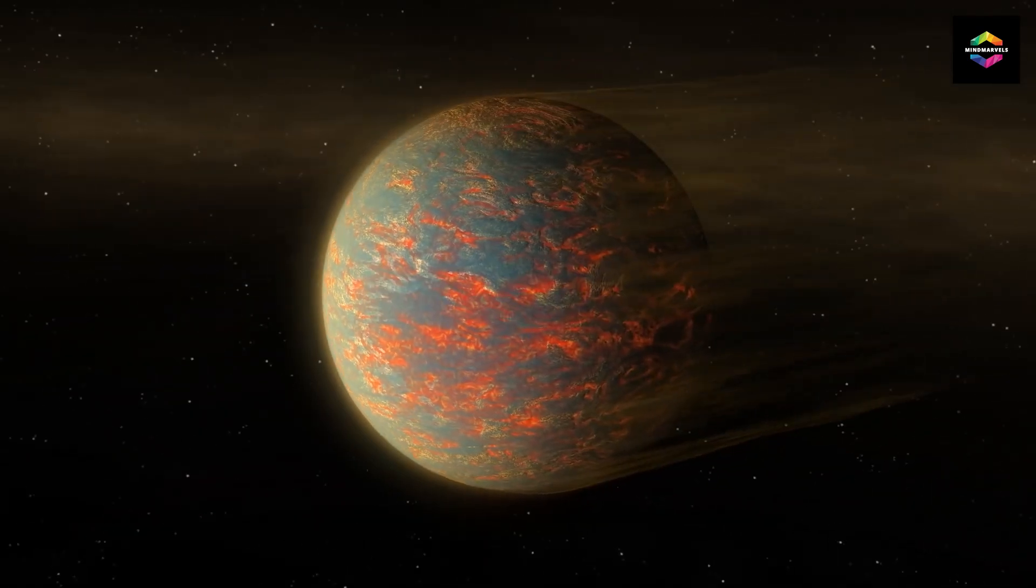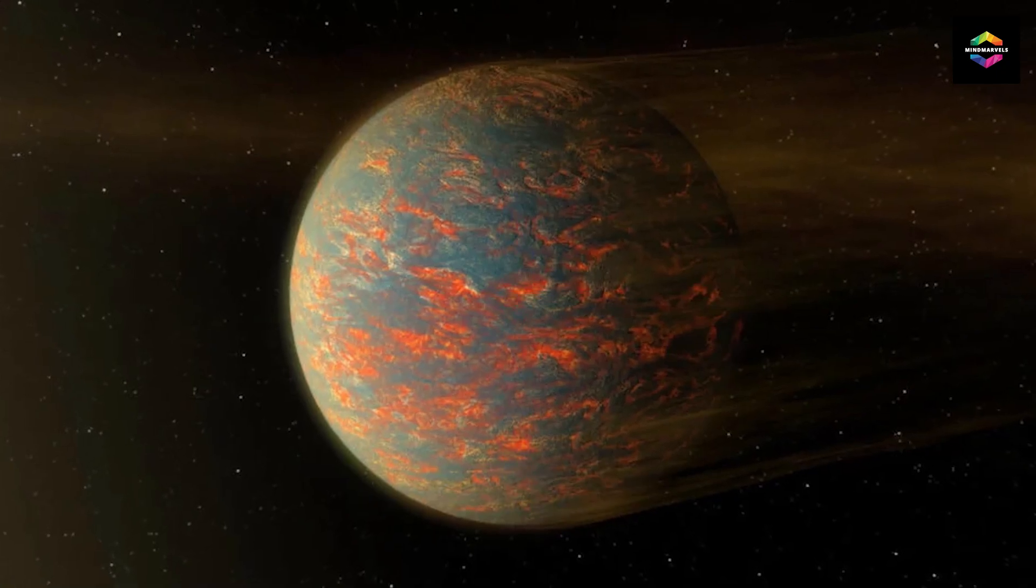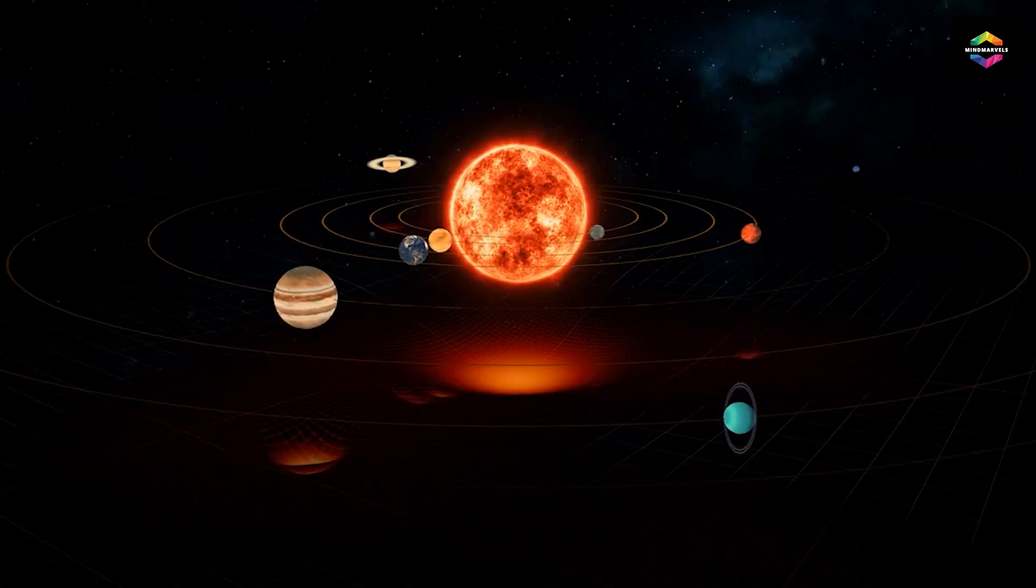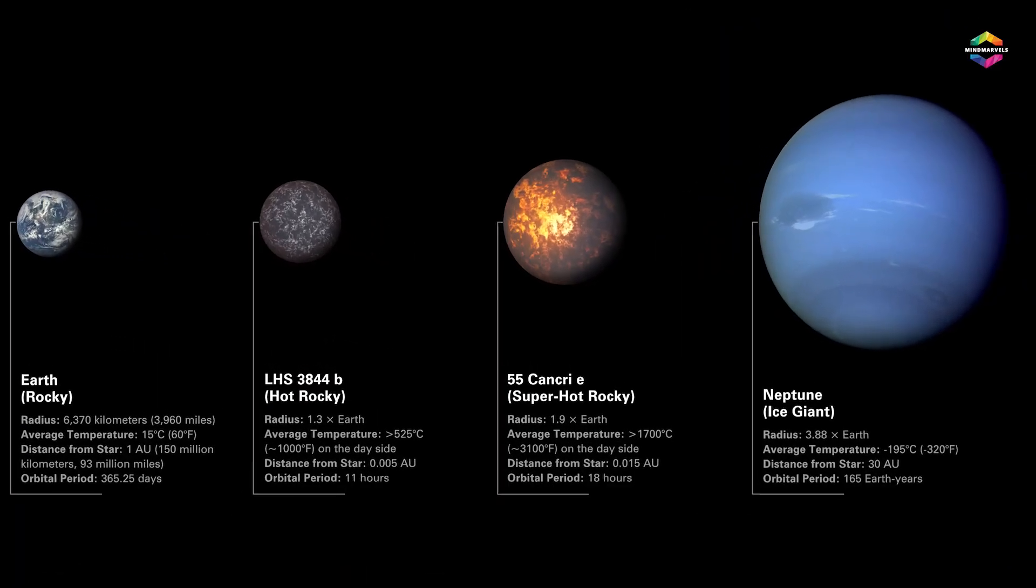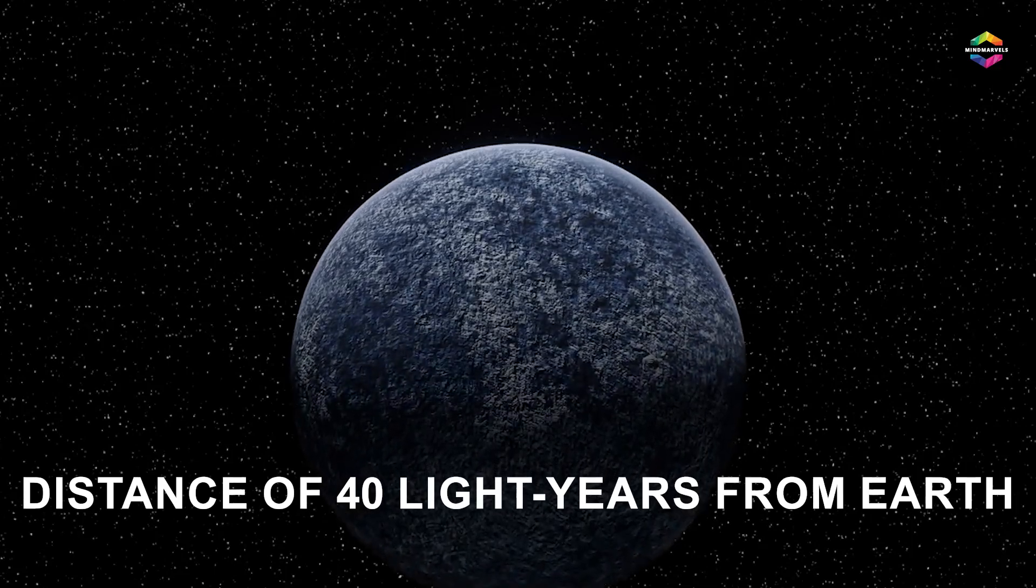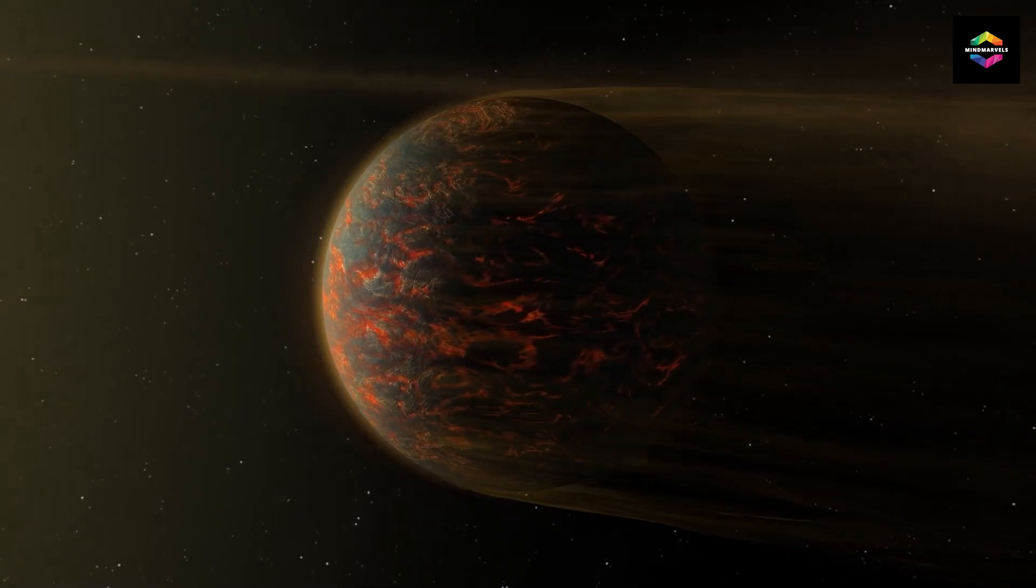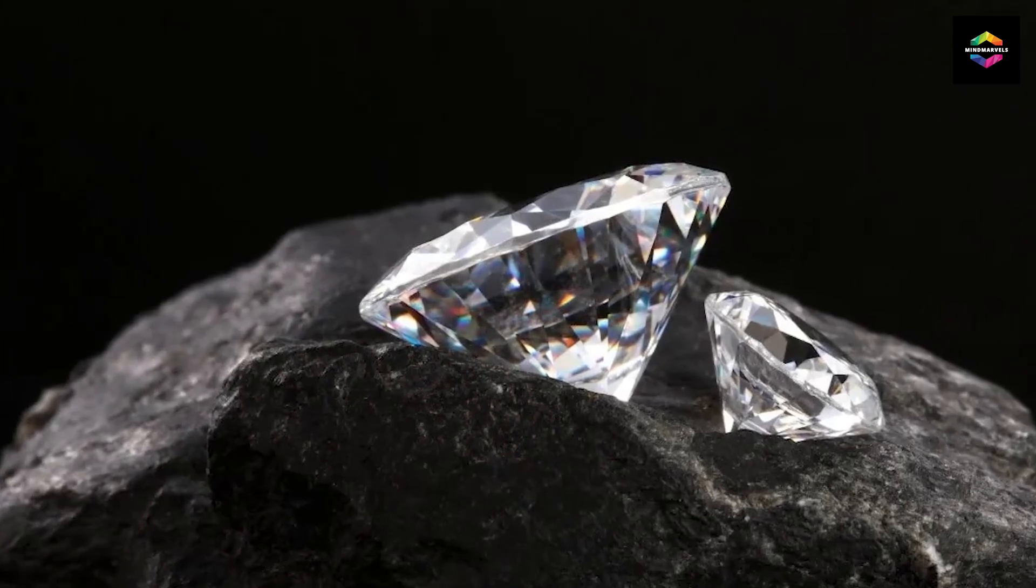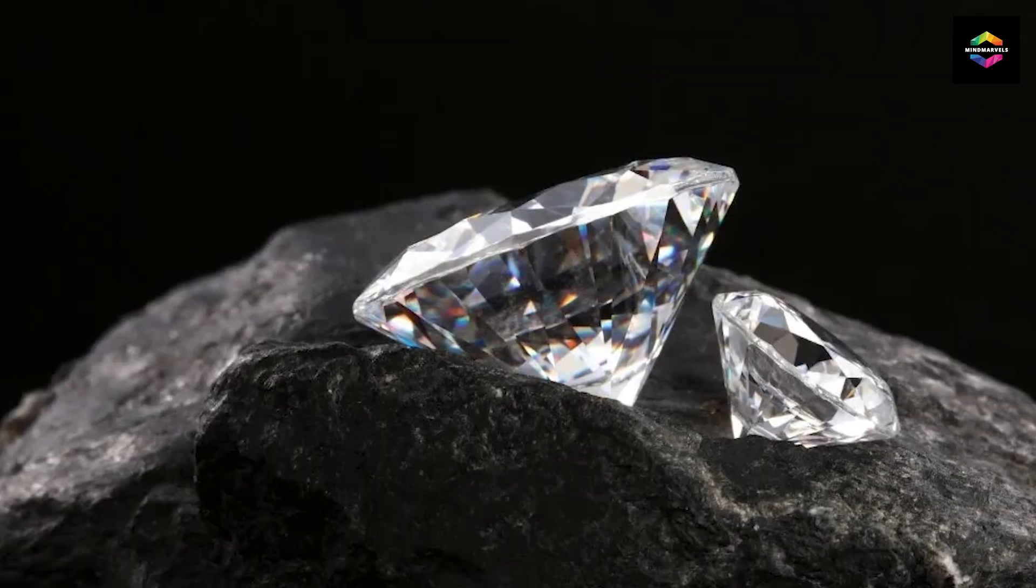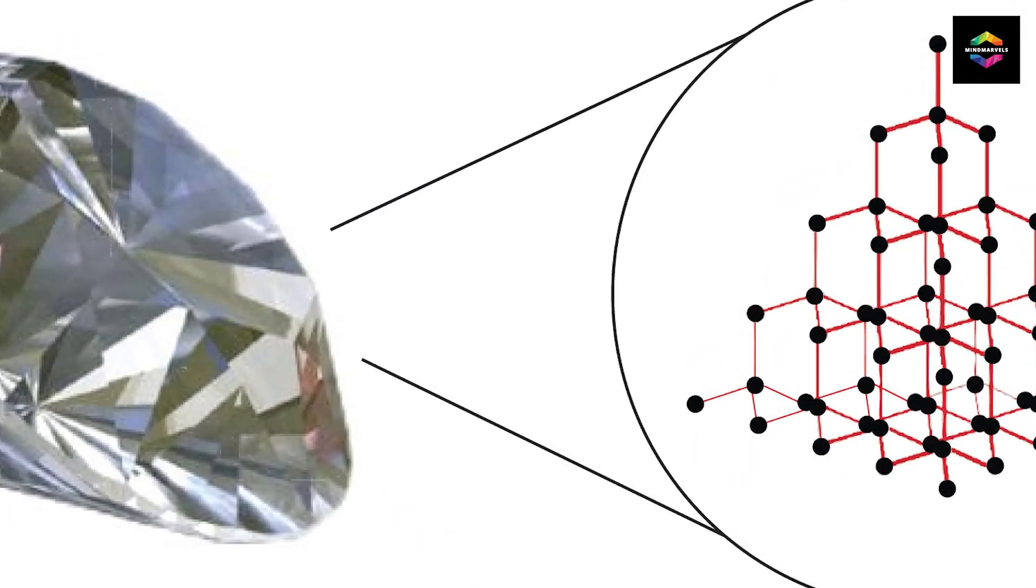Number six, there is a planet made almost entirely of diamond. 55 Cancri e is a rocky exoplanet, or planet outside our solar system, that is almost twice as big as Earth and revolves around its star at a distance of 40 light years from Earth. What makes it so unique is that it's estimated to be made up of at least a third pure diamond due to its high carbon to oxygen ratio, causing carbon to bond and form a crystalline structure similar to diamond.